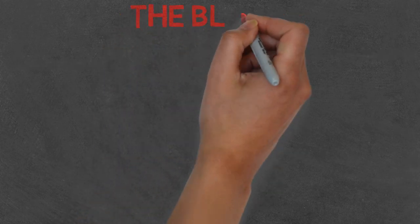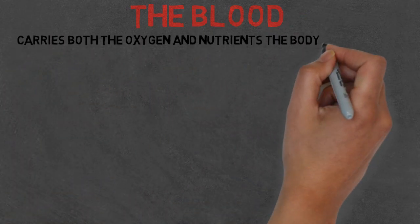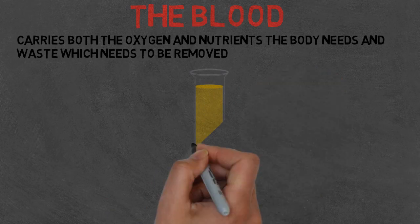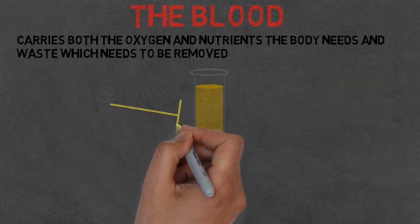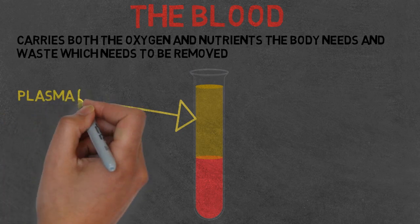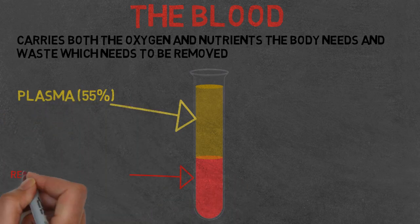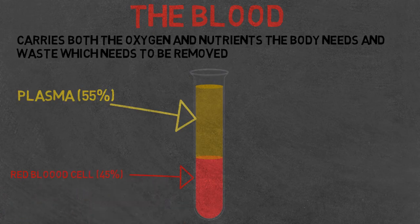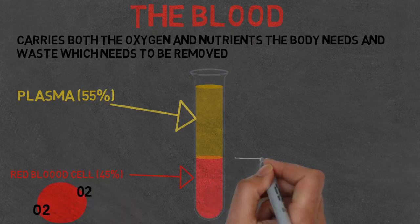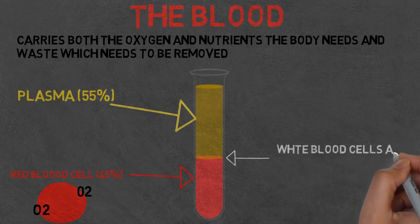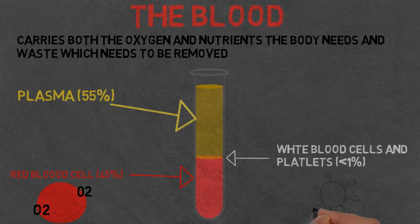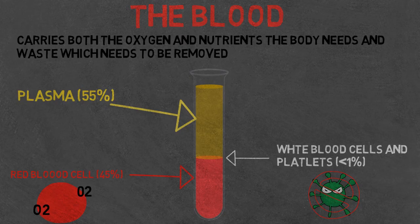Now let's look at the blood. It carries the oxygen and nutrients the body needs and wastes which it doesn't. The blood is made up of plasma, which is the liquid component in which everything else is suspended — it consists of water, dissolved salts and proteins. We've got the red blood cells which contain haemoglobin which help carry oxygen from the lungs to body tissues. We then have the white blood cells which are primarily responsible for defending the body against infections. And lastly platelets — when you cut yourself, they help clot the wound, stopping you from losing any more blood.